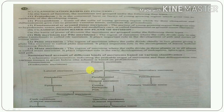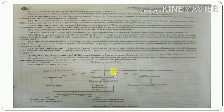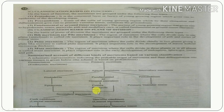Secondary meristem gives rise to cork cambium and vascular cambium. Cork cambium is related to lateral meristem, as discussed in position-based classification, and periderm is also related to lateral meristem. Vascular cambium and secondary vascular tissues are also related to the lateral type of meristem.